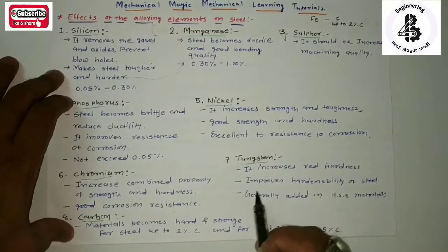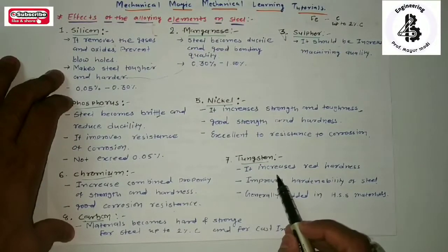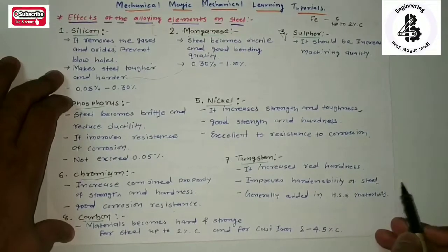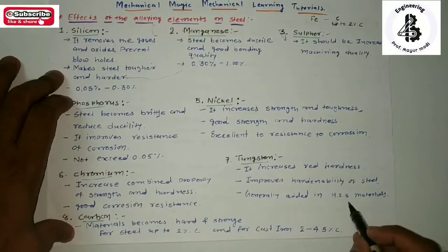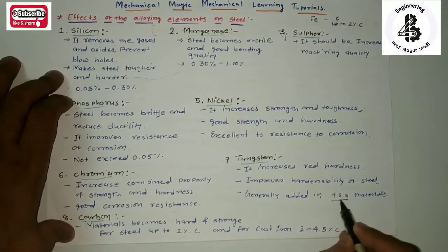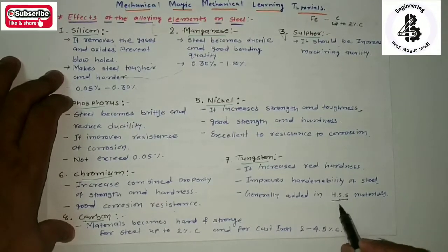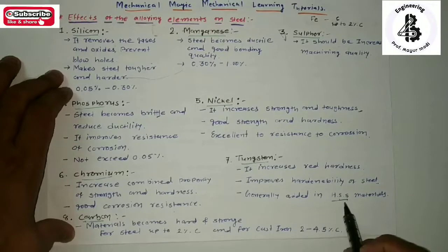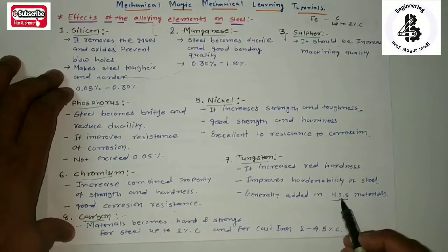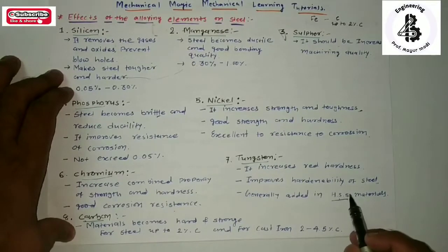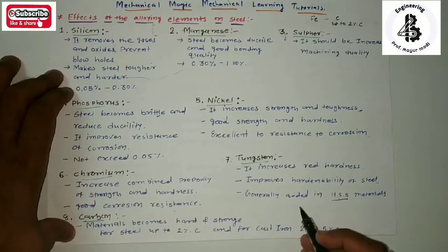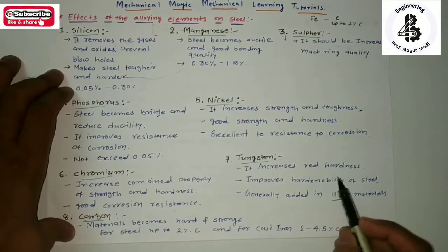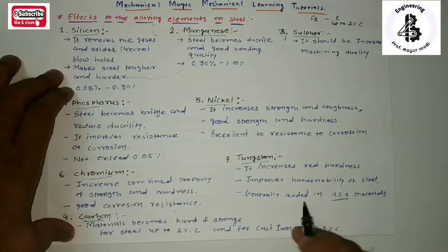Seventh element: tungsten. By the addition of tungsten, it increases the red hardness of materials and improves the hardenability of steels. It is generally added to HSS — high speed steel — materials, which are used for cutting tool materials. These materials have excellent hardness, excellent ability to cut other materials, a high melting point, good resistance to wear and scratches, low tear, and good cutting force ability. Increasing red hardness is necessary for cutting tool materials for conventional machining.